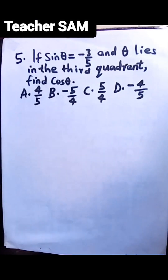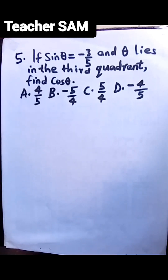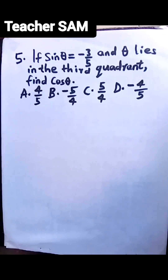We have question 5. If sine theta is equal to minus 3 over 5 and theta lies in the third quadrant, find cos theta. We have some options: Option A, 4 over 5. Option B, minus 5 over 4. Option C, 5 over 4. Option D, minus 4 over 5.